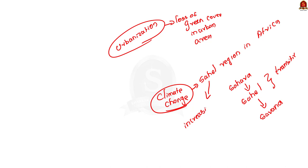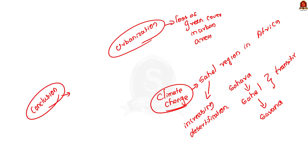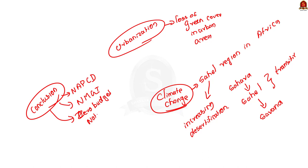You need not limit yourself to the examples I have given — you can look for your own. For the conclusion, write about measures taken by the Indian government to combat desertification: the National Action Plan to Combat Desertification, National Mission on Green India, Zero Budget Natural Farming, the Per Drop More Crop component of Pradhan Mantri Krishi Sinchayee Yojana, the Food and Fodder Development Program to combat overgrazing, and the Evergreening Revolution suggested by Dr. M.S. Swaminathan.